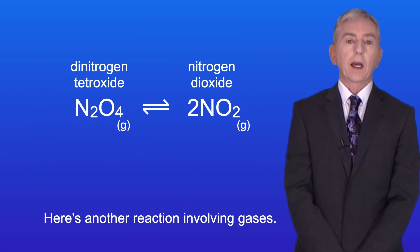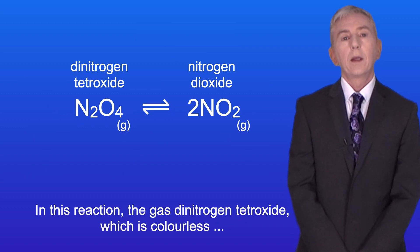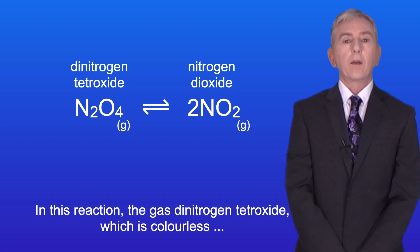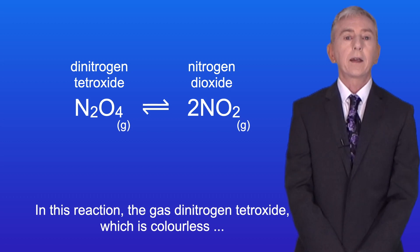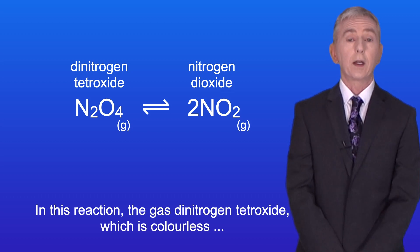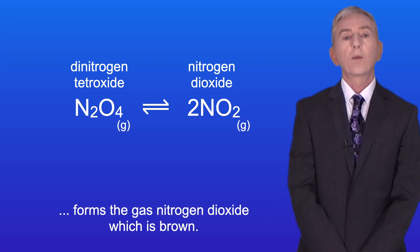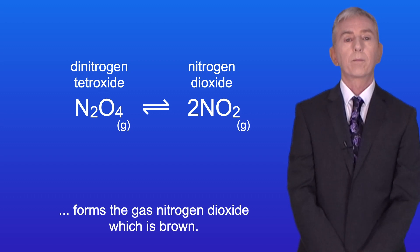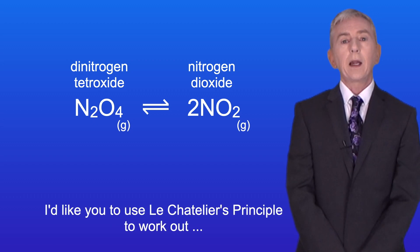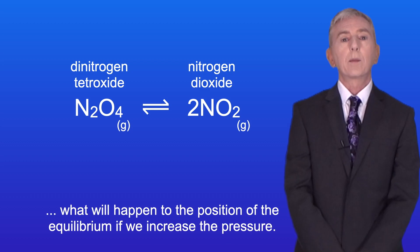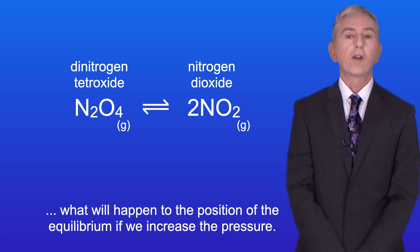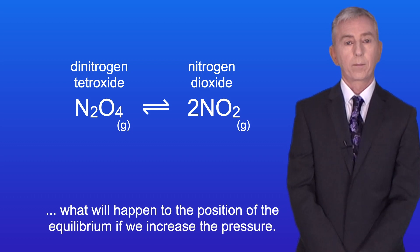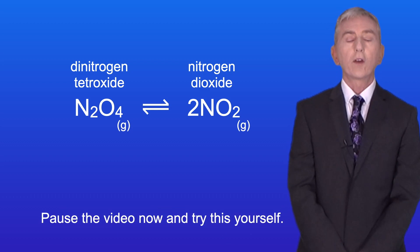Here's another reaction involving gases. In this reaction the gas dinitrogen tetroxide, which is colourless, forms the gas nitrogen dioxide, which is brown. I'd like you to use Le Chatelier's principle to work out what will happen to the position of the equilibrium if we increase the pressure. Pause the video now and try this yourself.